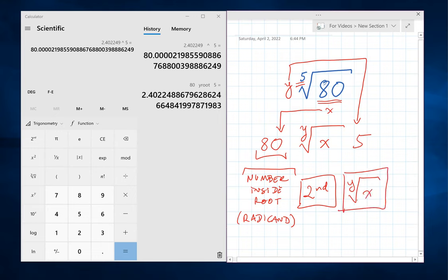If you had already pressed the second key before that, you don't have to do it again. And then the index of the radical, the little number above the root symbol. And hit equal.